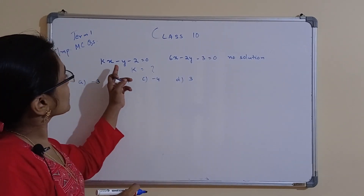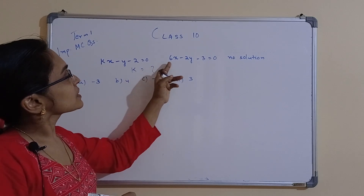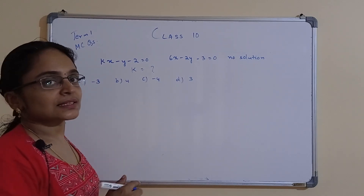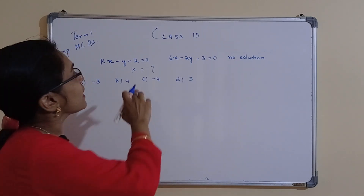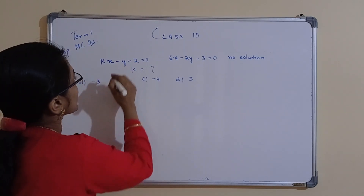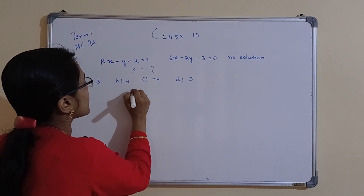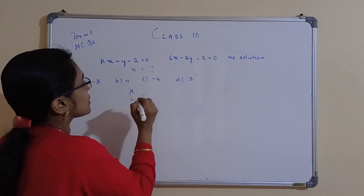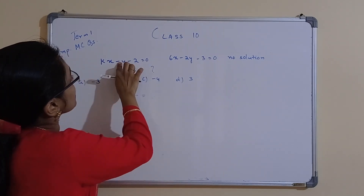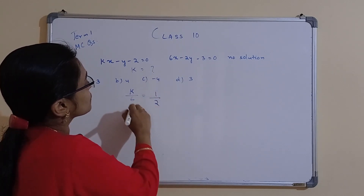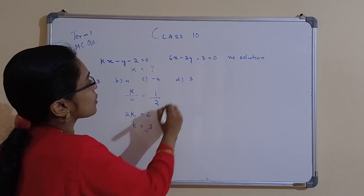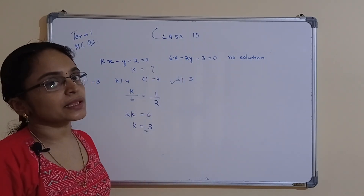Next: if the system kx − y − 2 = 0 and 6x − 2y − 3 = 0 has no solution, find k. No solution means parallel lines, so a1/a2 = b1/b2 but ≠ c1/c2. So k/6 = 1/2, which gives k = 3. Option D, k = 3, is the correct answer.